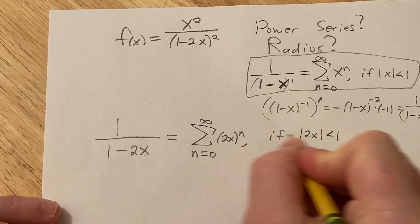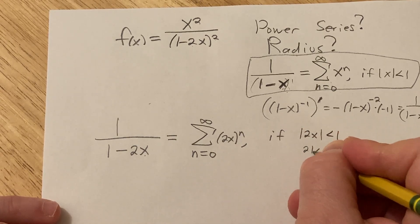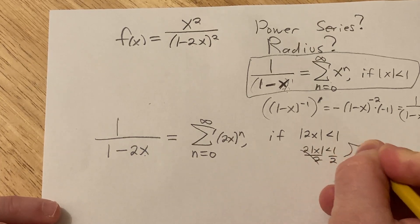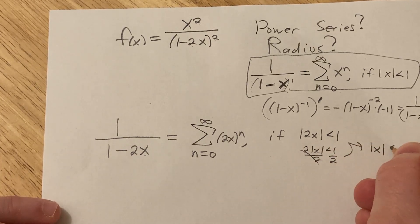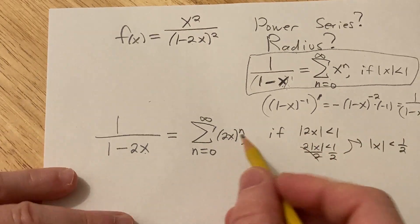So here, let's solve this for x. We can simply do this and then divide by 2. So we have the absolute value of x less than 1 half. And the radius is going to be 1 half because this is a power series centered at 0.